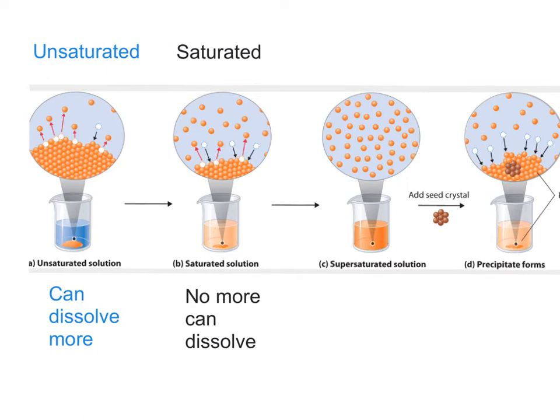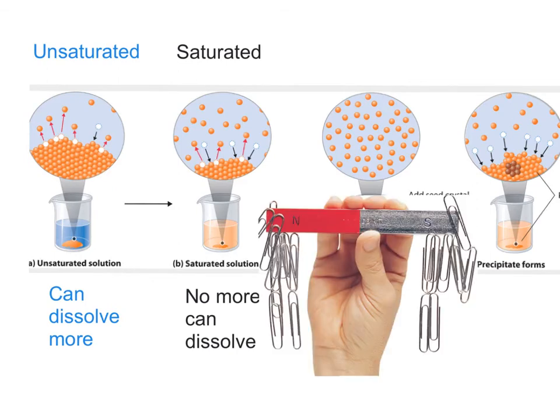Every once in a while you can make what's called a super saturated solution. In a super saturated solution, somehow you've managed to get your solvent to hold more solute than it should be able to hold. This can happen — it's kind of like, have you ever seen a magnet holding a bunch of paper clips? Like in this picture? The paper clips are being held by magnetic traction. That's really the same force that holds solute particles in a solution — the same electromagnetic force, just on a smaller scale with the atoms.